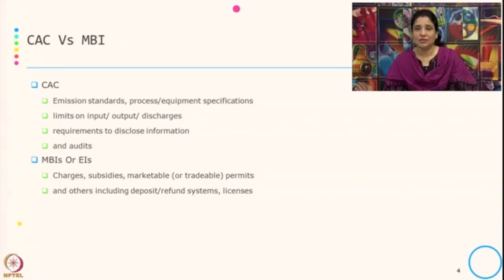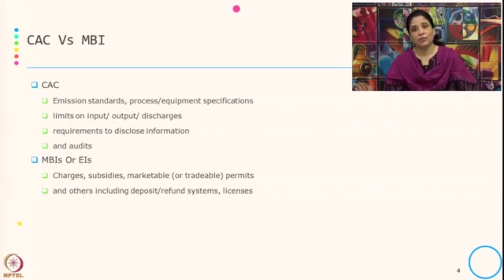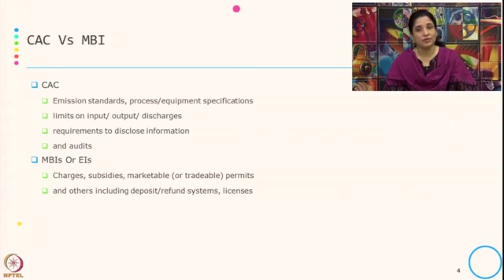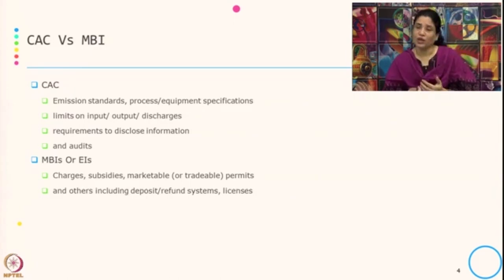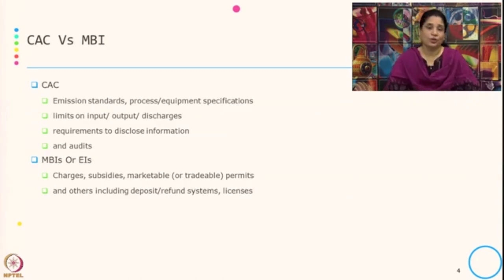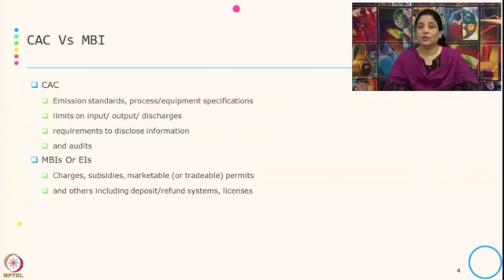A typical example of an emission standard is that for vehicles we have the Euro 6, that is Bharat 6 or Euro 6 — the standard for vehicles that is the mandate which has to be followed. When it comes to tradable permits, if you have reduced emission more than the targets, the rest can be used as permits which can be traded in the market. The details we will see when we discuss the emission trading scheme.